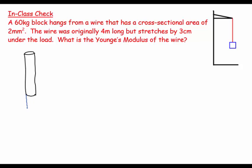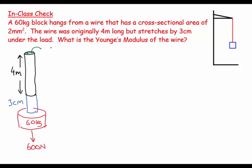It's stretched by a certain amount and what's causing the stretching is this block. There's my visualization. The block is 60 kilograms, so this is going to be 600 newtons. The original length of the wire was 4 meters, the extension is 3 centimeters, and the cross-sectional area is 2 square millimeters.